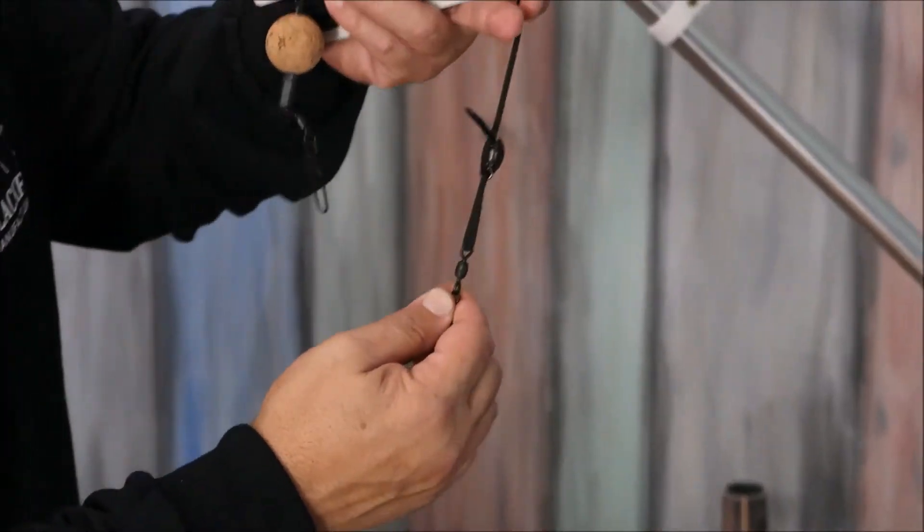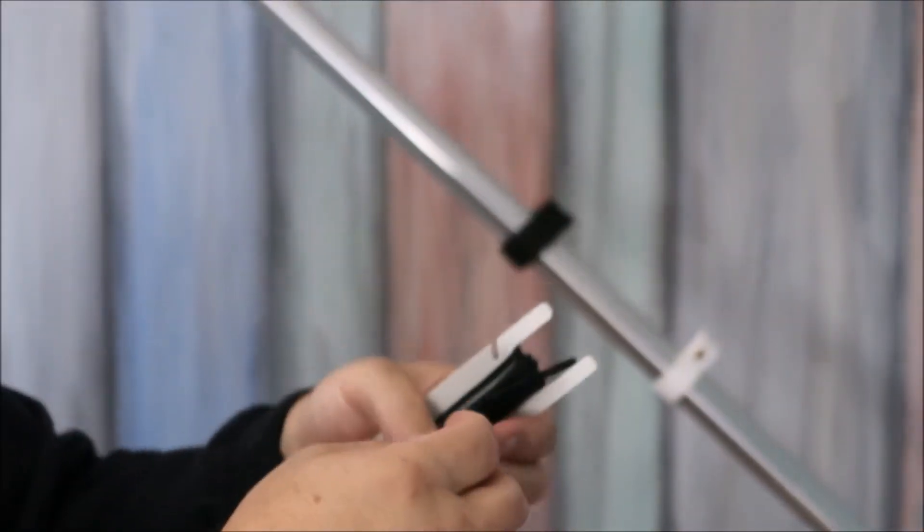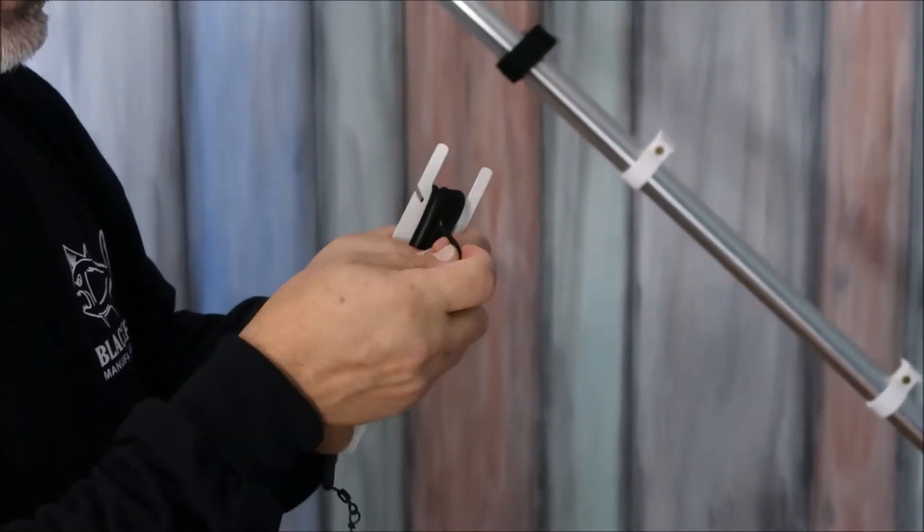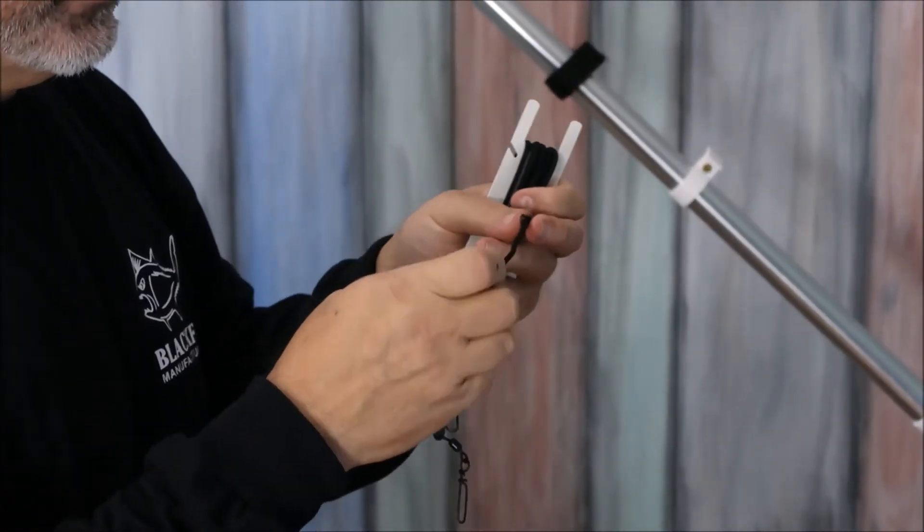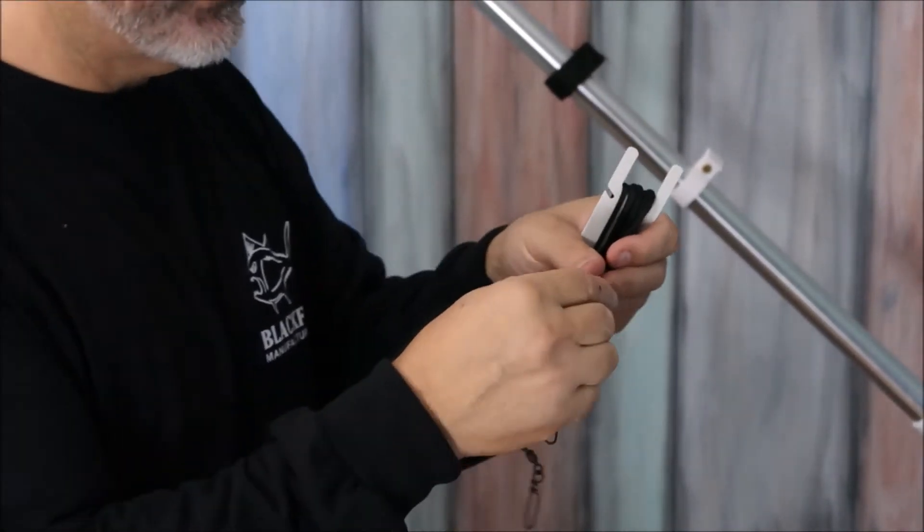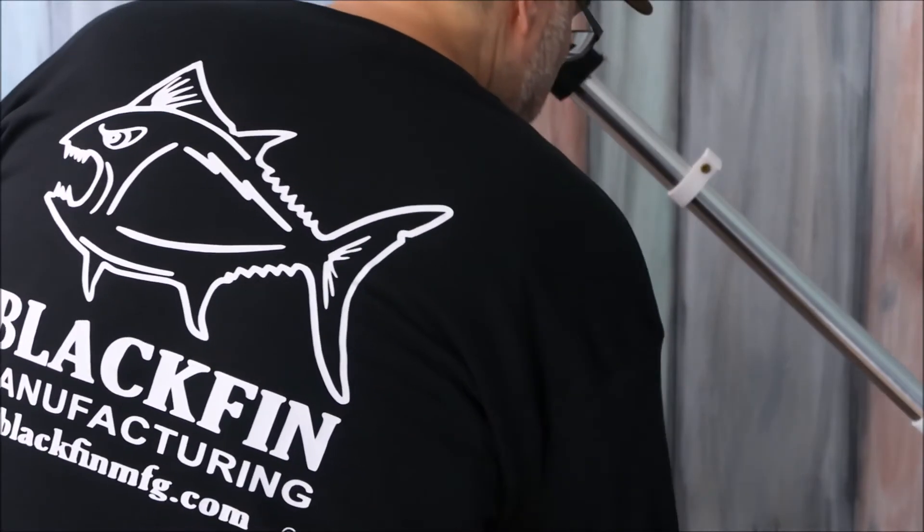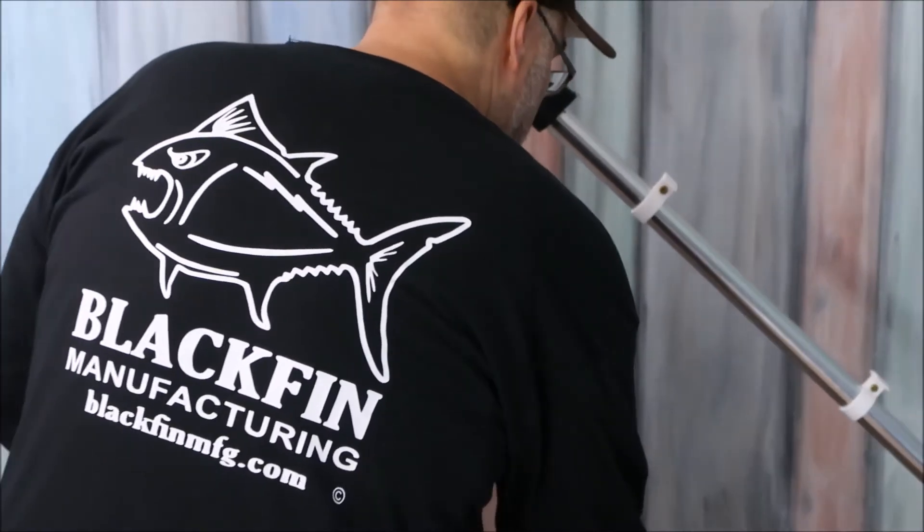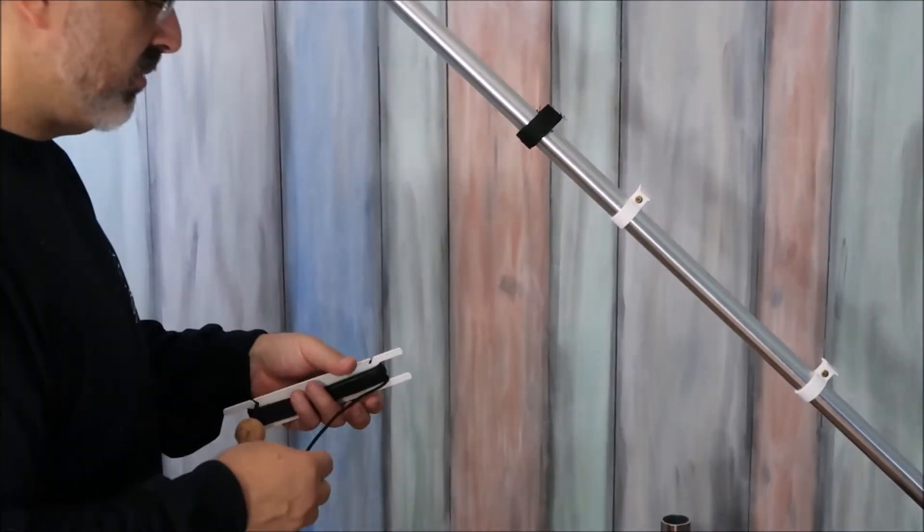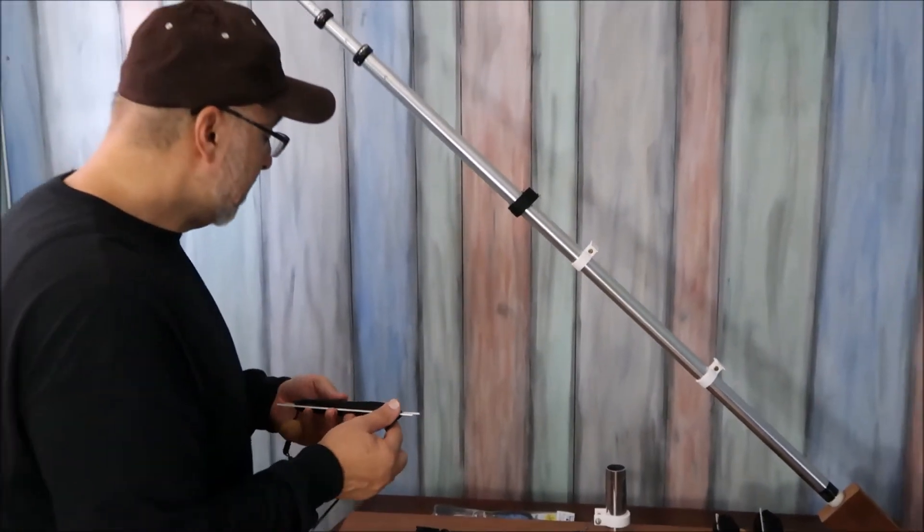And we start by just taking off the swivel and the coastlock. We send them on there so you can see how it's done. Once we've got those removed by sliding the line through it, we just put those down by the outrigger pulley so they're handy when we need them.